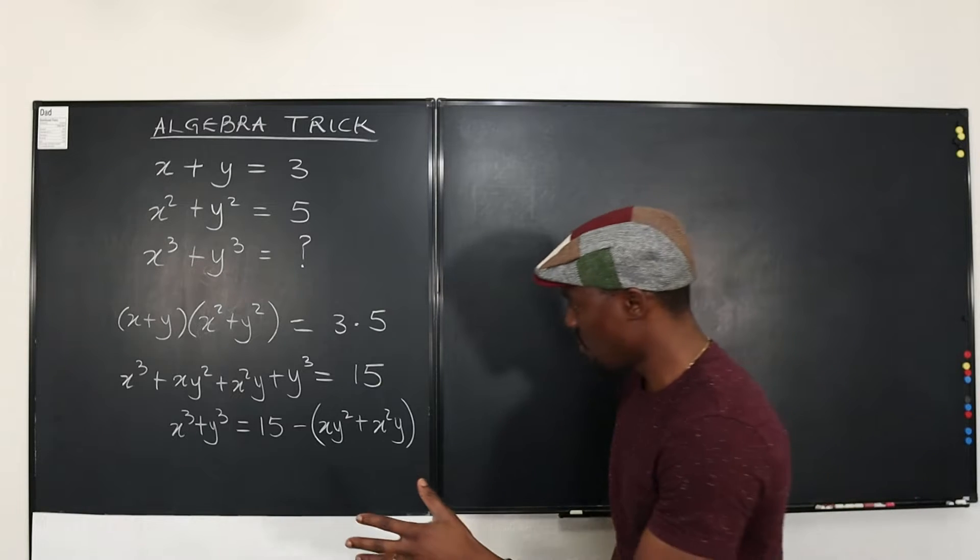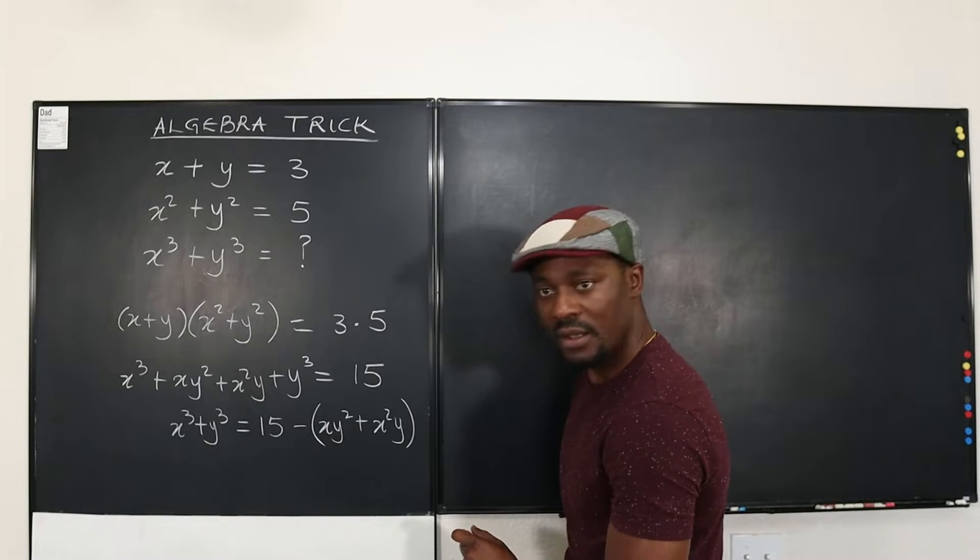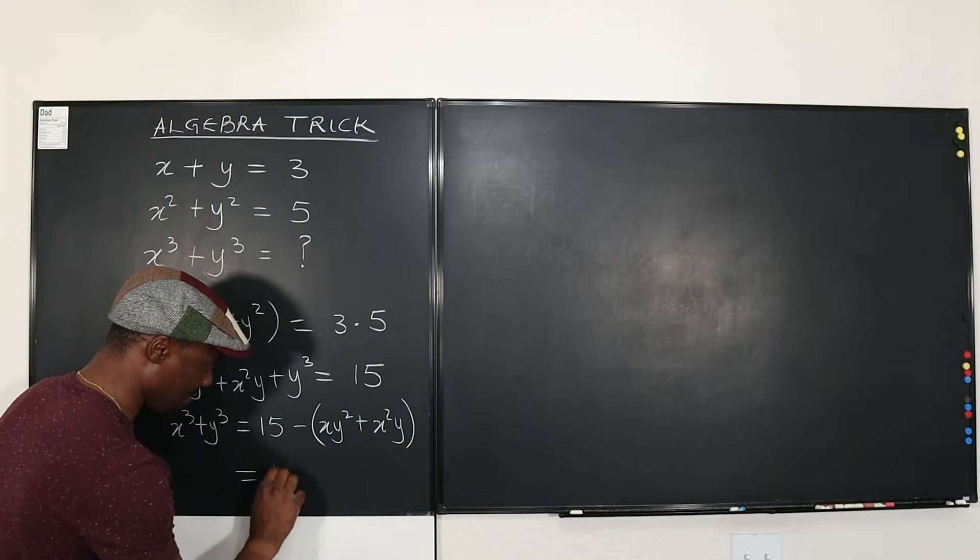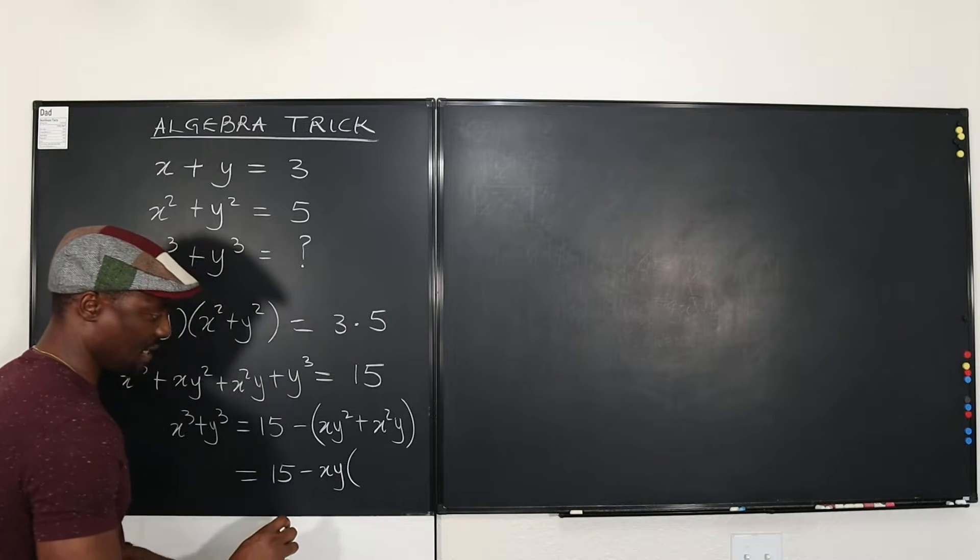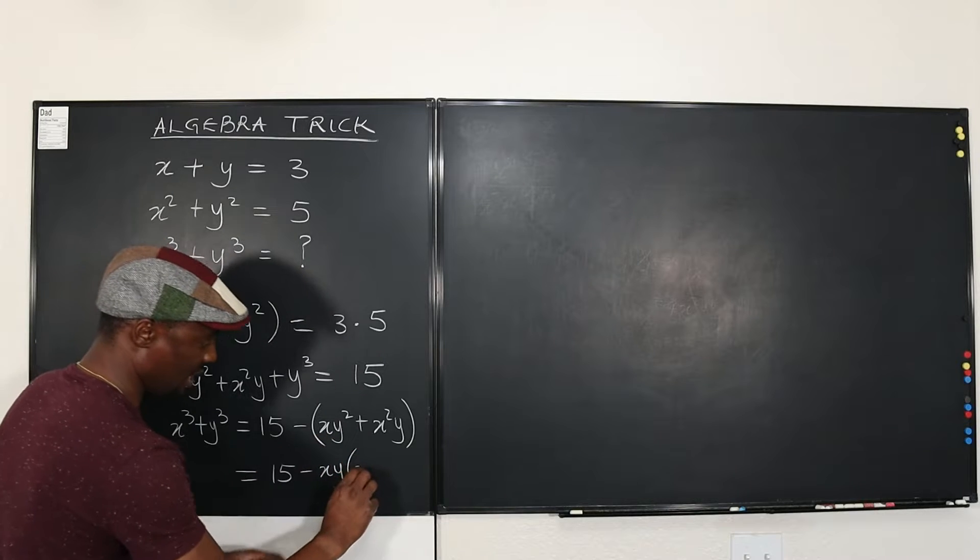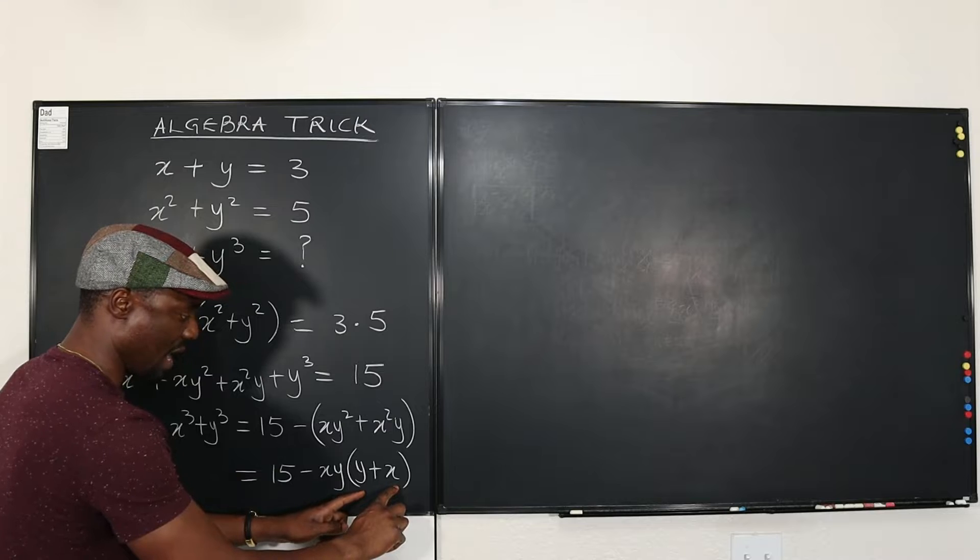Can I factor what is common to this and this? XY. Oh, I see. So I can actually rewrite this expression as 15 minus XY multiplied by, because XY is here, XY is here. If I take out XY here, I got Y. If I take out XY here, I've got X. So that's X + Y.